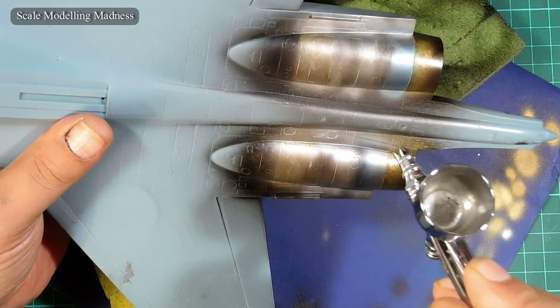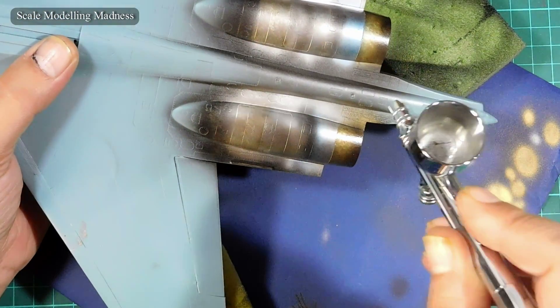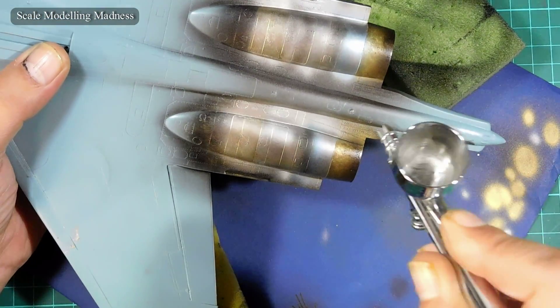I added some burnt metal for panel lines and a little bit of transparent blue to round things up. Lastly, I gave everything a very light coat of pale burnt metal. The undercoat did show through. Unfortunately, it doesn't really show through in the pictures.